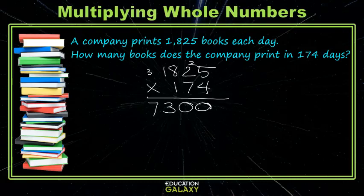Now as we move into the 10's place, we want to account for the fact that it is the 10's place. We put that 0. Now we can do 5 times 7 is 35, carry the 3. 2 times 7 is 14, plus the 3 we carried. 8 times 7 is 56, plus the 1 we carried. And 1 times 7 is 7, plus the 5 we carried.